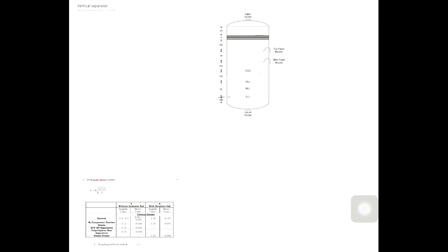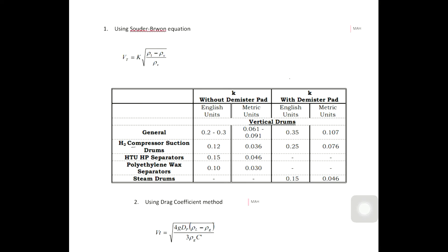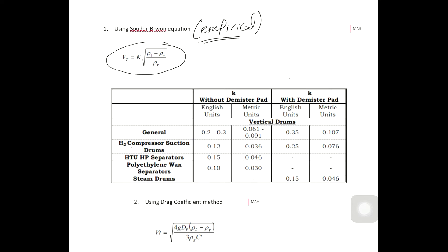In today's video, I will explain the concepts for preliminary sizing of vertical two-phase separators. First, we have two methods that can be used to size the vertical vapor-liquid separator. The first one is called the Souders-Brown equation, which is empirical — meaning it was derived using experiments.